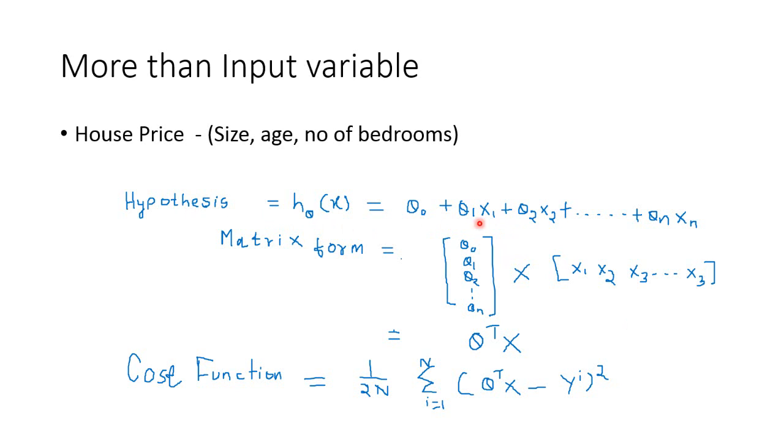When we have n number of input variables, the hypothesis is like this: theta 0 plus theta 1 x1 where theta is the parameter. And then we just write it up to xn. But the only problem is that we cannot draw this on a graph. As you know, on a pane or paper or on a two-dimensional, we can only show three-dimensional figure. Beyond that, it's very difficult. So it's very difficult to visualize so many variables in the graph.